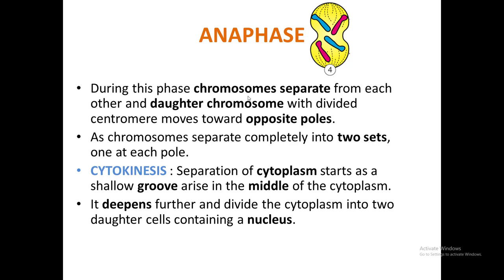After anaphase, cytokinesis starts with the division of the cytoplasm. As shown in the diagram, a shallow groove — also called a furrow or cleavage — arises in the middle of the cell and deepens further inward. This channel deepens and divides the cytoplasm into two halves, forming two daughter cells.